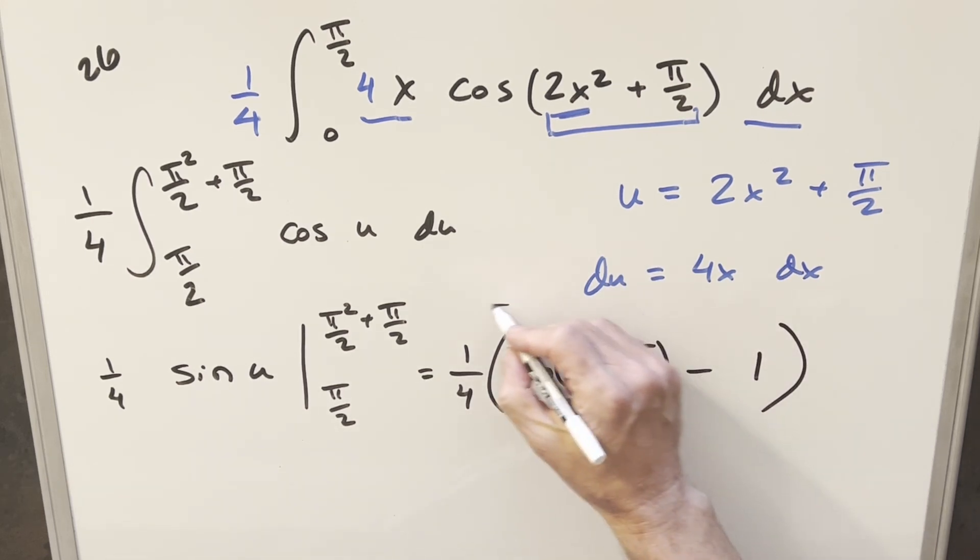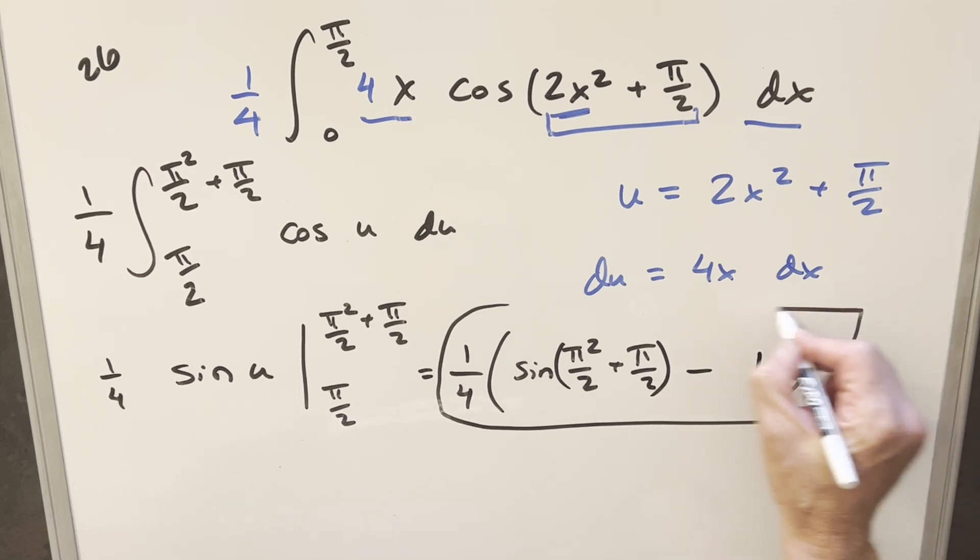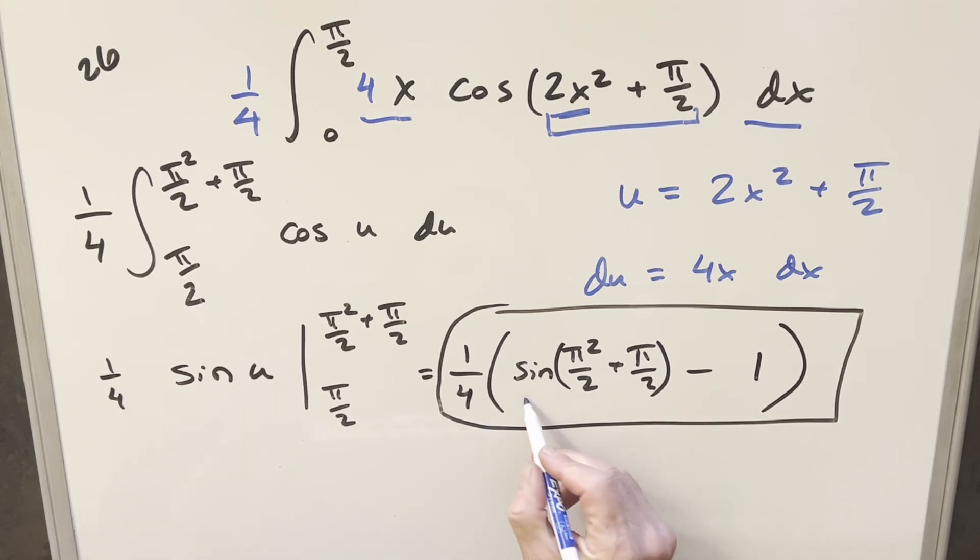And this right here, this is a fine solution. This is correct, and this matches what Vienna has in the answer key, although I'm not that comfortable with it. I don't really like having this in this form. It's fine, but let's see if we can simplify this a little bit.